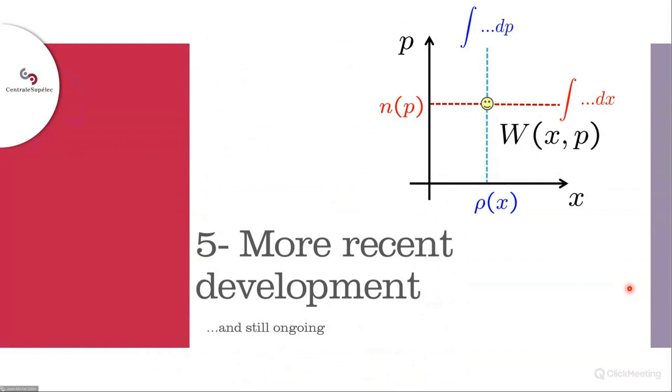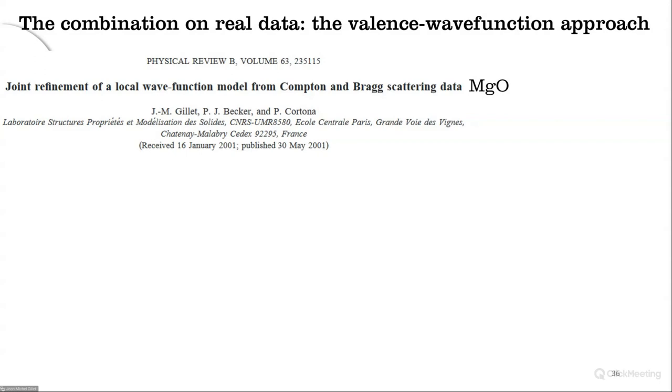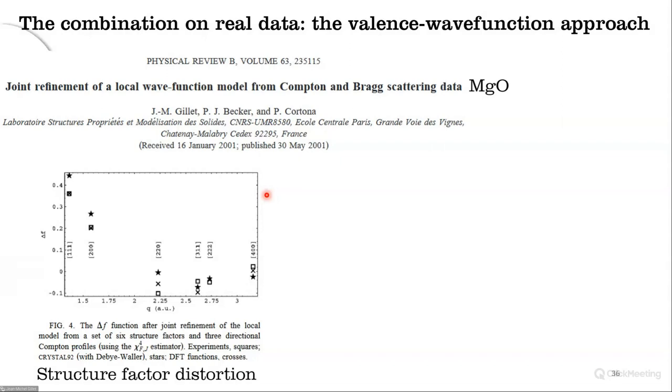So, let me come to the status of our own effort to recover a density matrix beyond the isolated atom case. At the beginning of the century, Pierre Becker, Pietro Cortona and myself have also experienced the difficult challenge of deriving what we could have called a density matrix. We formulated the problem in terms of valence wave function model for the magnesium oxide crystal. We used a set of six convergent electron beam diffraction structure factors and a set of eight directional Compton profiles. The model was quite crude, but still, the final fit was overall satisfactory.